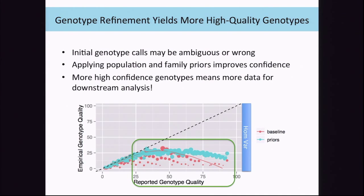To summarize: the genotype calls from the haplotype caller are pretty good, but some will be substandard. We can improve those using orthogonal data from population allele frequencies and from sequencing data from family members. This guarantees better quality data for all your downstream analyses.